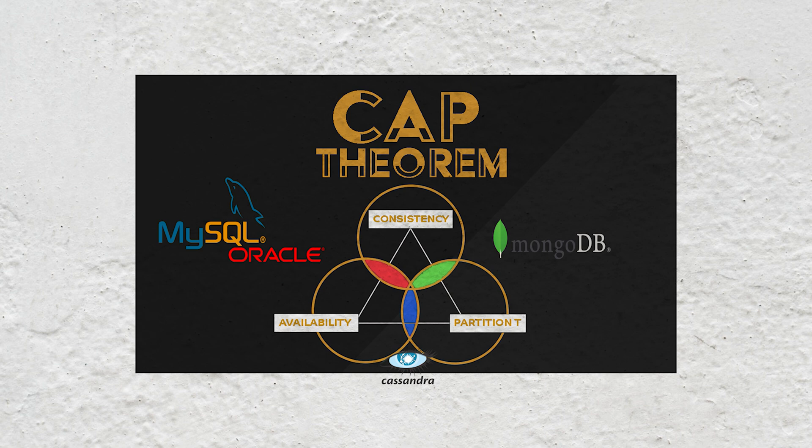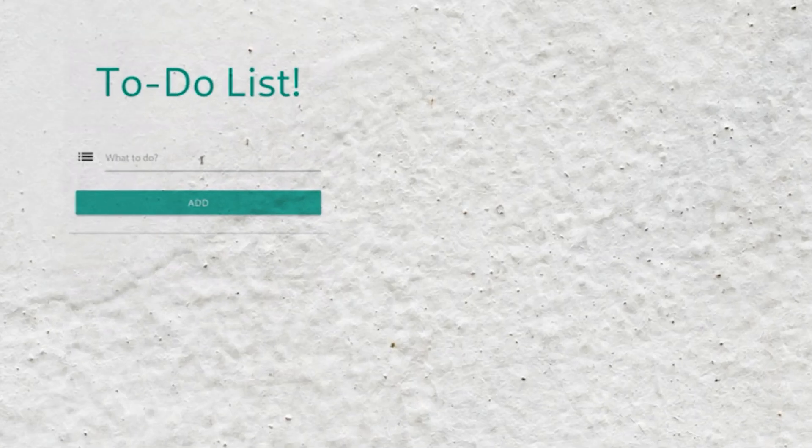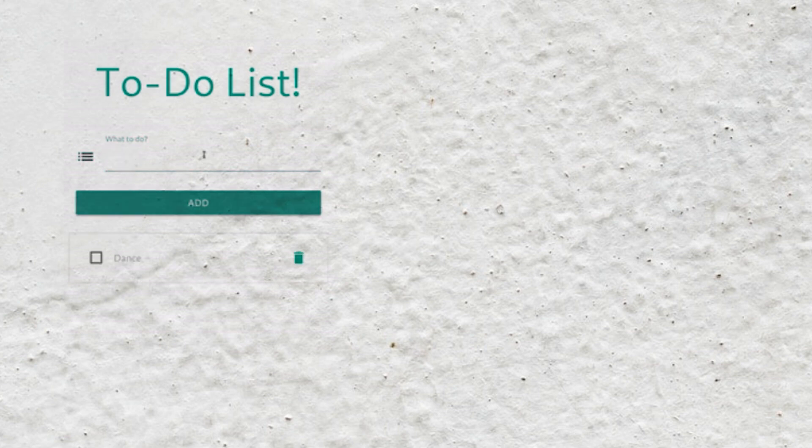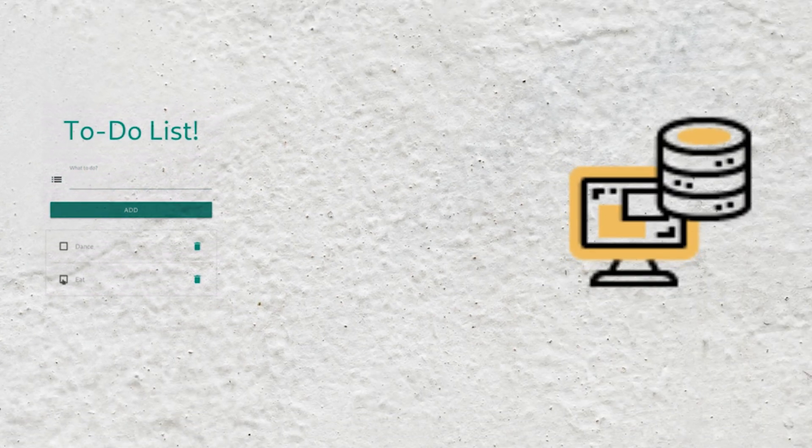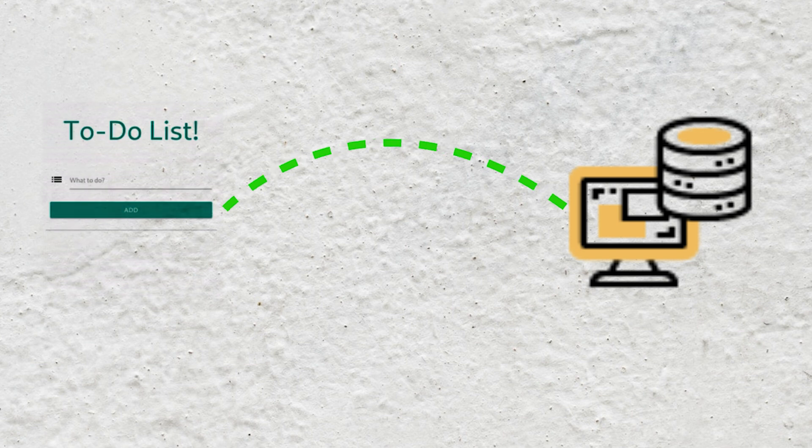But the concept of CAP is not just for backend engineers. Now let's see we are building a UI to-do list in JavaScript application and it is talking to an API server across the network. As long as the network is up, our UI is responsive and up-to-date.